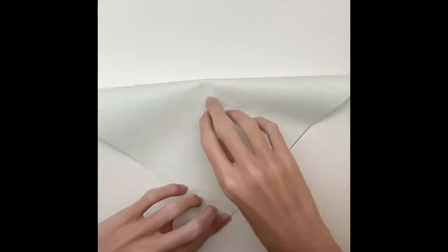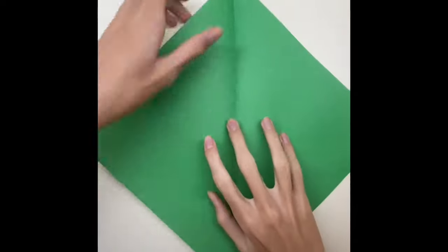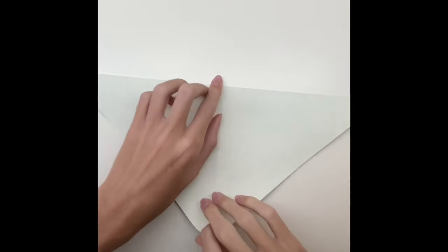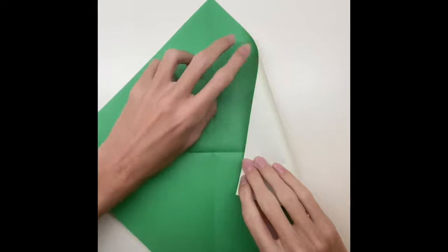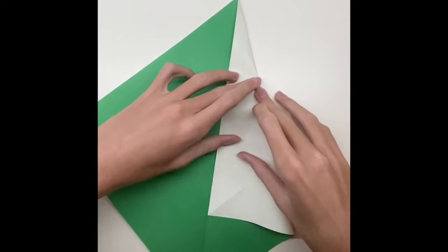First, fold the paper in half twice. Fold the paper to the middle line from both sides, and then fold it in half.